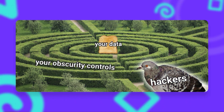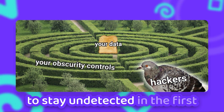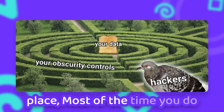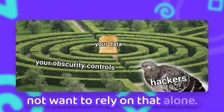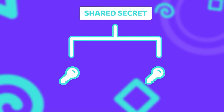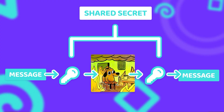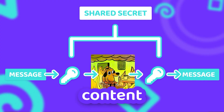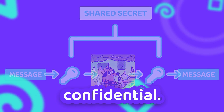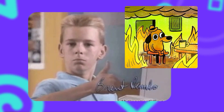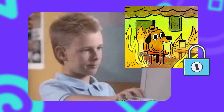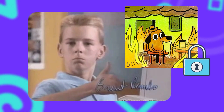While the goal of steganography is to stay undetected in the first place, most of the time you do not want to rely on that alone. So encrypting the message with a shared secret or password that both the sender and the receiver know is used a lot in combination with steganography to keep the actual content of the message confidential. So finally our password is stored fully secured inside of this image.